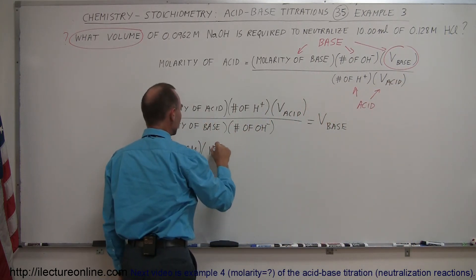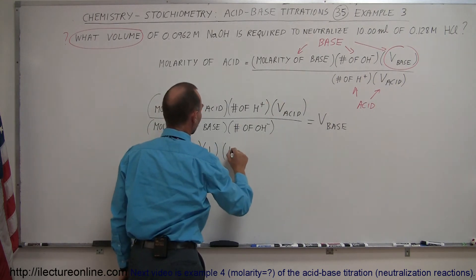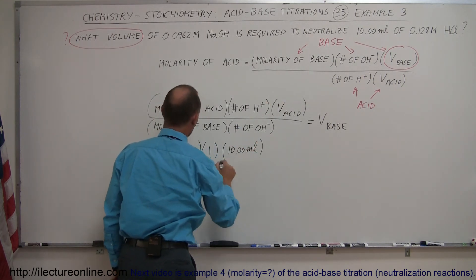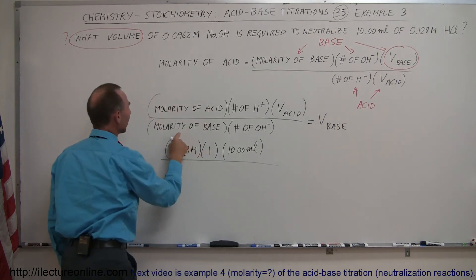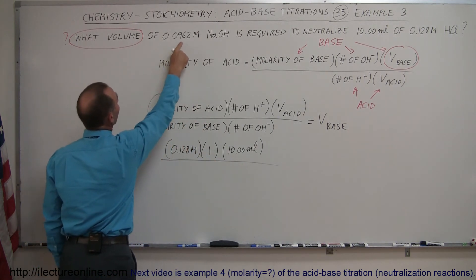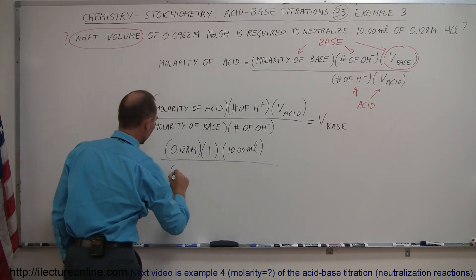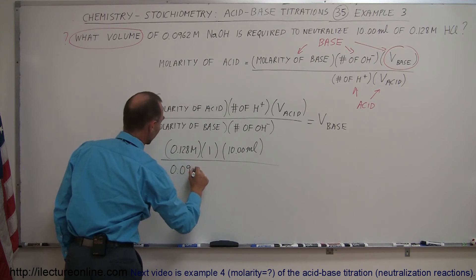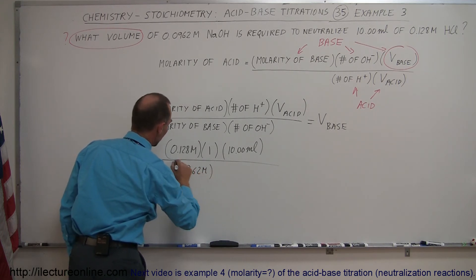So that would be just one. And then we have the volume of the acid, which they told us was 10 milliliters. We divide the whole thing by the molarity of the base, which they told us is 0.0962 moles per liter.